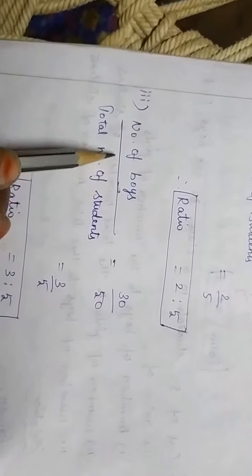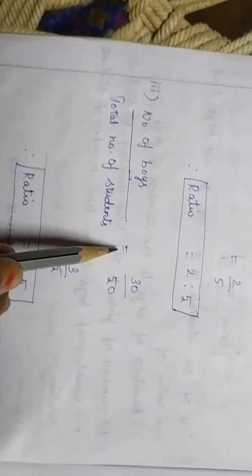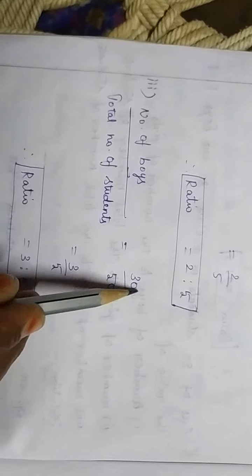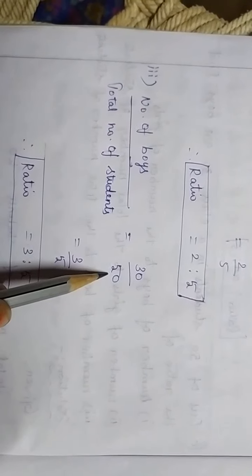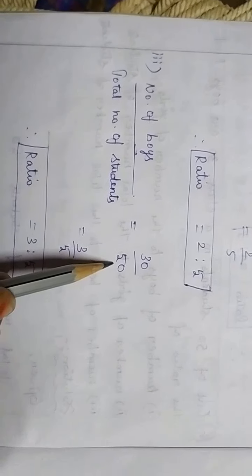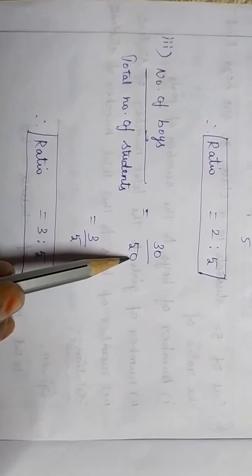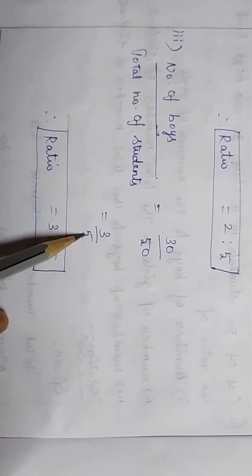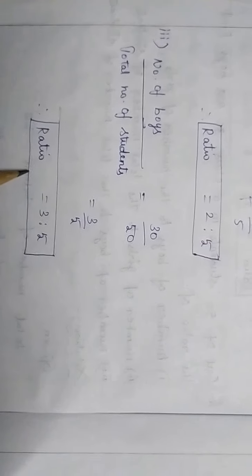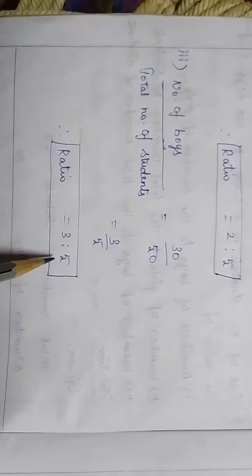Number of boys divided by total number of students: number of boys is 30, divided by total number of students which is 50. By cancelling this we will get 3 divided by 5. Now we have to write in ratio: 3 is to 5.